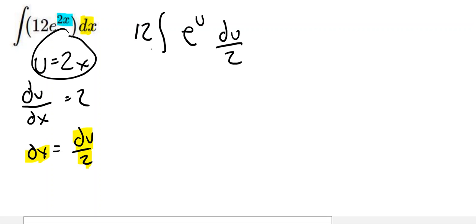Now this 2 can go underneath the 12. 12 divided by 2 would give me 6 times the integral of e^u du. See how nicely this simplifies down to just the basic exponent rule. We know that the antiderivative of e^u is e^u, so 6e^u plus c.